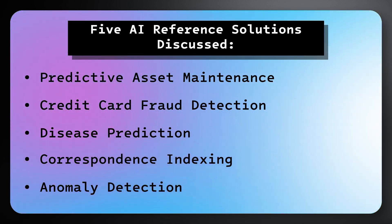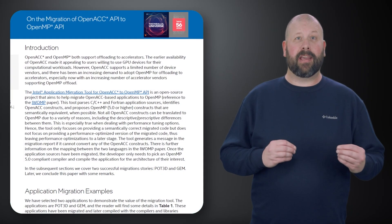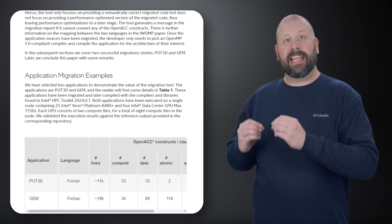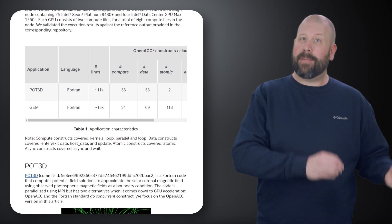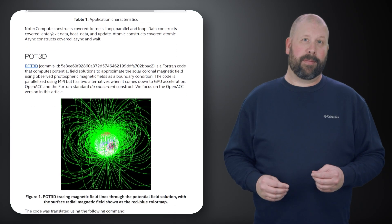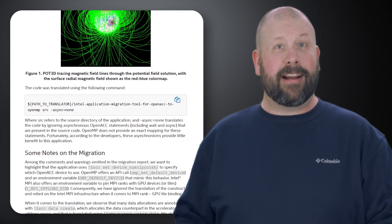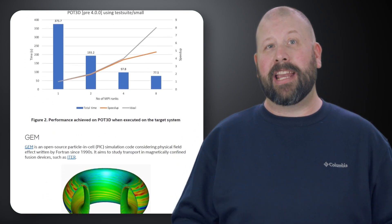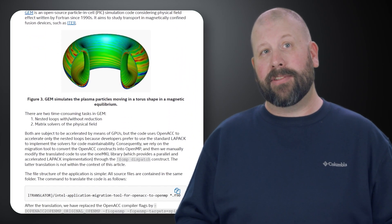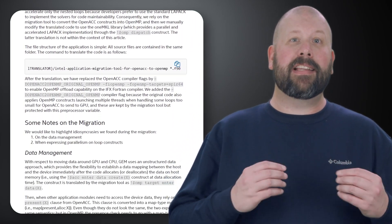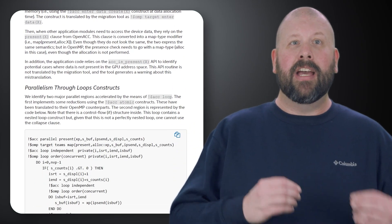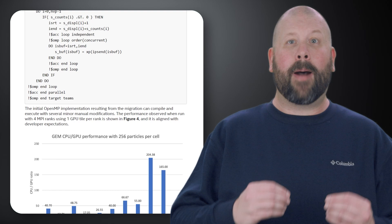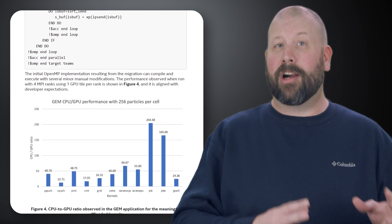Our final story today: read the migration of OpenACC API to OpenMP API article, which explores the migration process of transitioning from the OpenACC API to the OpenMP API for parallel programming. It provides insights into the similarities and differences between these two popular APIs used for accelerating scientific and engineering applications on CPUs and GPUs. The migration involves adapting existing code written with OpenACC to utilize the OpenMP API effectively, leveraging parallelism and optimizing performance across diverse hardware architectures.